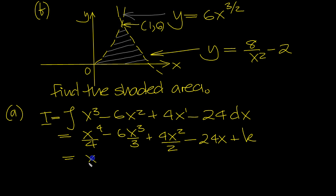Let's tidy it up then, so it's x to the 4 over 4. This is 2, isn't it? 3 goes into 6 twice, so it's 2x cubed. 2 goes into 4 twice, so it's plus 2x squared, minus 24 lots of x plus k. So that's part a.